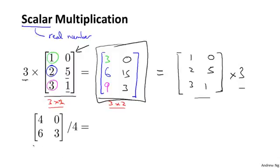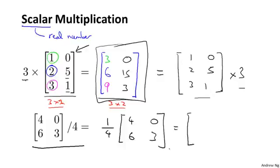You can also take a matrix and divide it by a number. So it turns out taking this matrix and dividing it by 4, this is actually the same as taking the number 1 quarter and multiplying it by the matrix.